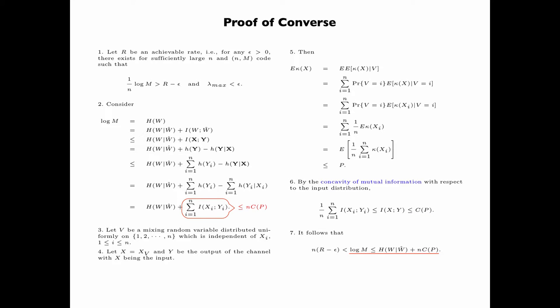It then follows from step 2 that log M is less than or equal to the entropy of W given W-hat plus n times C(P). With the assumption that lambda max is less than epsilon, by invoking Fano's inequality, this conditional entropy tends to 0 as epsilon tends to 0. And with the assumption that 1/n times log M is greater than R minus epsilon, log M is lower bounded by n times (R minus epsilon). Thus, n times (R minus epsilon) is less than the entropy of W given W-hat, which tends to 0, plus n times C(P). By cancelling n on both sides and letting epsilon go to 0, we conclude that R is less than or equal to C(P). This proves the converse of the channel coding theorem.